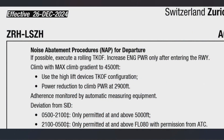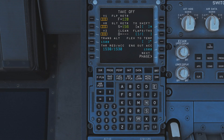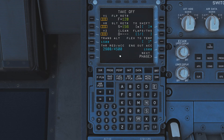Zurich is very, very tough when it comes to noise abatement. They most definitely have microphones fitted everywhere around the airport and they will find you if you don't stick to their procedures. It says: climb with maximum climb gradient to 4,500 feet, use the high-lift devices in the takeoff configuration, power reduction to climb power at 2,900 feet. So the thrust reduction is at 2,900 and at 4,500 we are allowed to accelerate. We put that into the FMS and fly it accordingly. Be aware that sometimes the AOI says AGL and sometimes it doesn't — if it doesn't say AGL, it's an altitude, so you just enter what you find in the document.